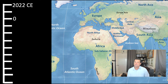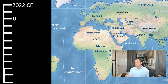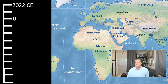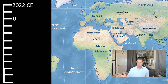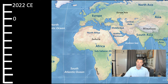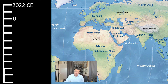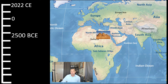BCE and CE have been used in scholarly journals since the 17th century, so they're not actually that new. Currently you're taking this class around 2022, so 2,000 years ago is roughly time zero, and about 4,500 years ago would be 2,500 BCE — that's when the pyramids in Egypt were built.